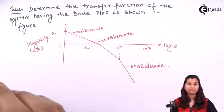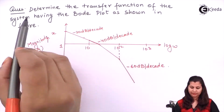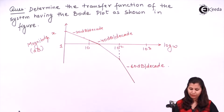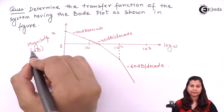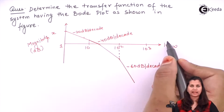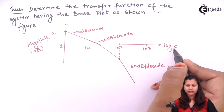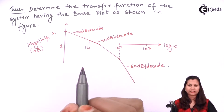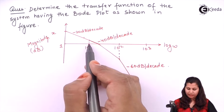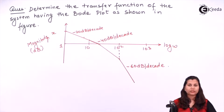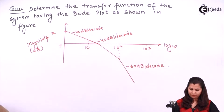Our problem is to determine the transfer function of the system having the Bode plot shown in the figure. On the y-axis we have the magnitude in decibels (dB) and on the x-axis we have log omega, that is the logarithm of the frequency. The frequency starts from omega equals 1, then omega equals 10, 100, and 1000. So we have to determine the transfer function of this system using this Bode plot.